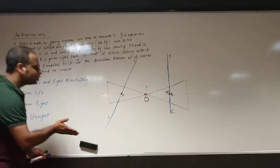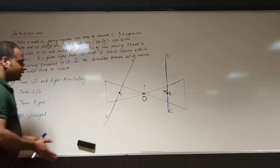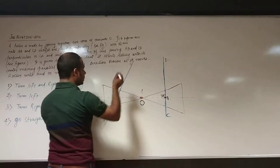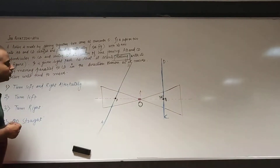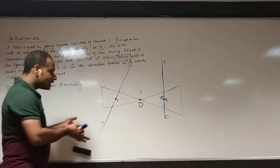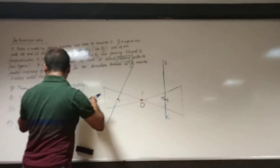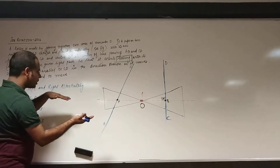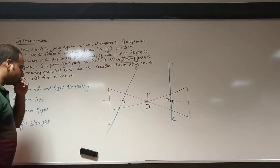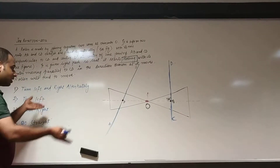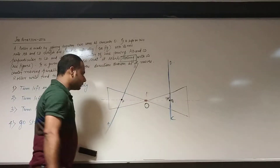The roller is given a light push so that it starts rolling with its center of mass moving parallel to CD. As it moves, the roller will tend to move — alternately (first left then right), or turn left, or turn right, or go straight. We have to check which one is correct.